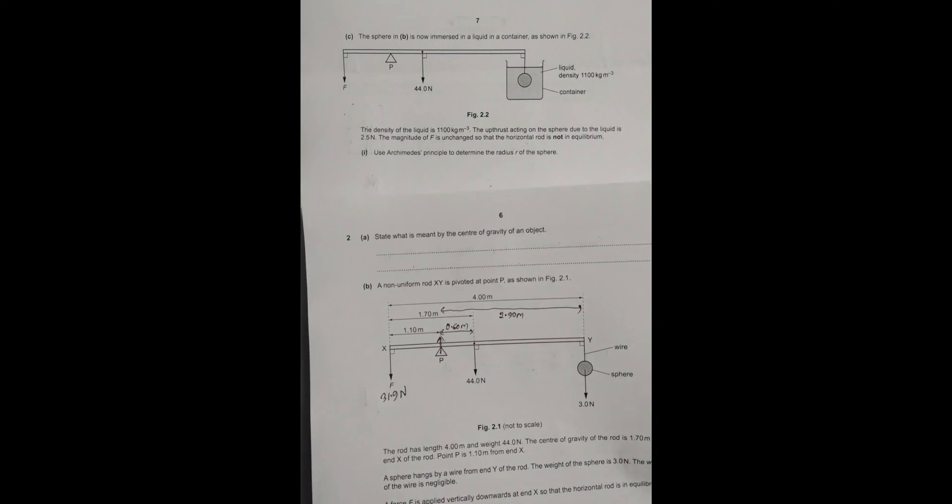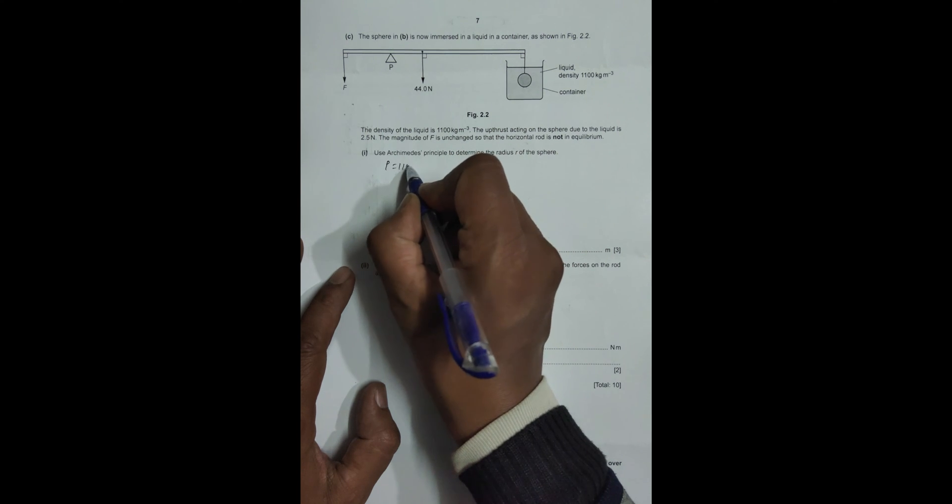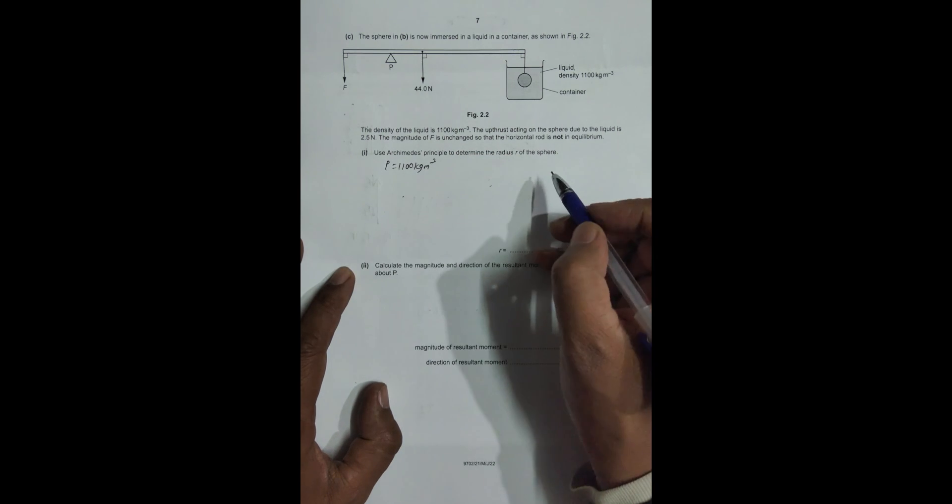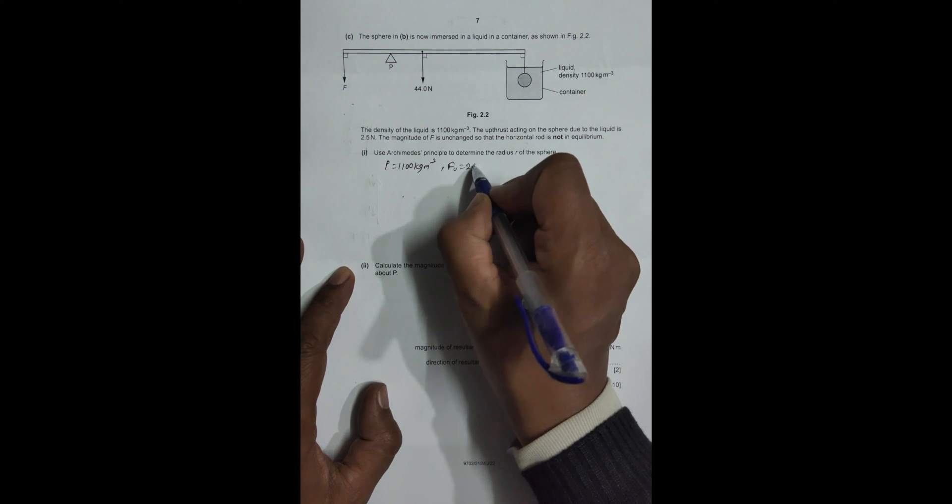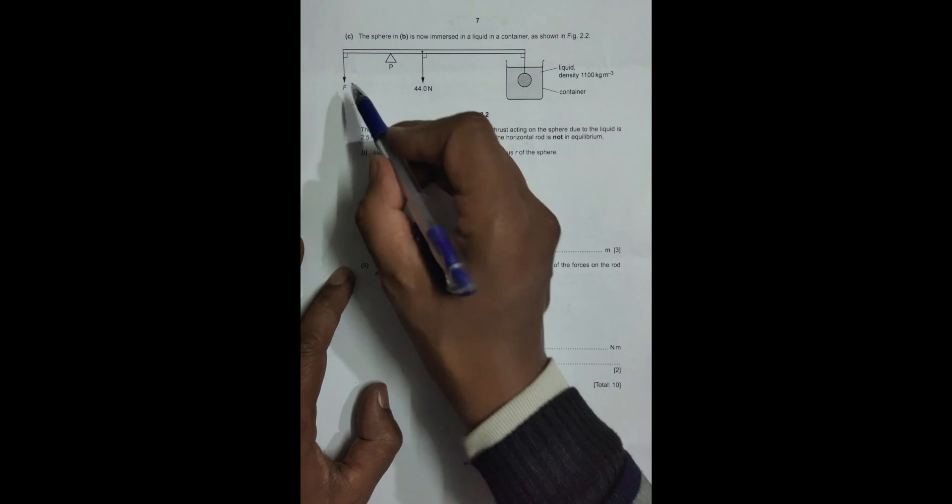Now the sphere is immersed in a liquid in a container. The density of the liquid is 1100 kg per meter cubed. The upthrust acting on the sphere due to the liquid is 2.5 Newtons. The magnitude of F is unchanged, so the rod is no longer in equilibrium. Use Archimedes' principle to determine the radius r of the sphere.